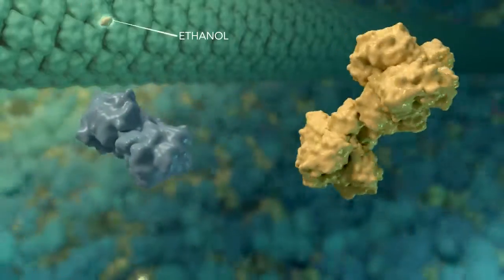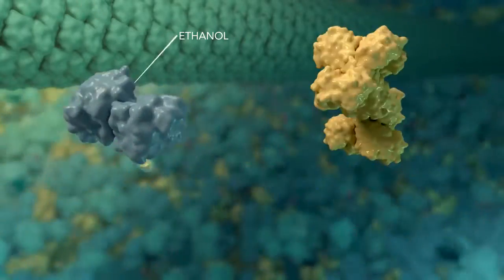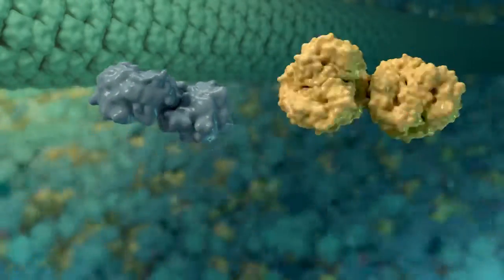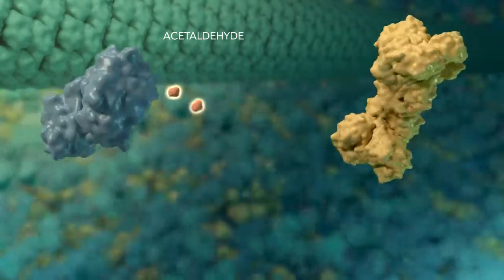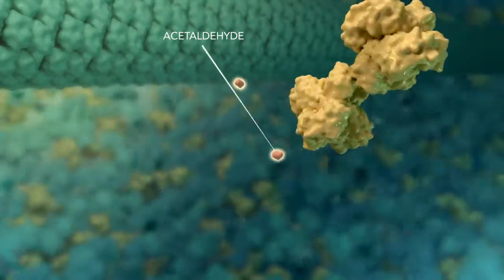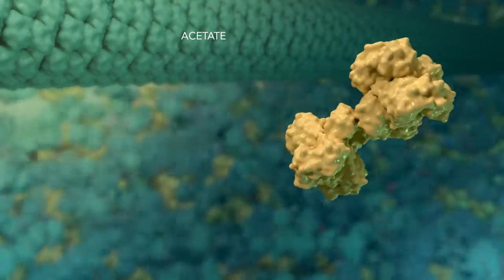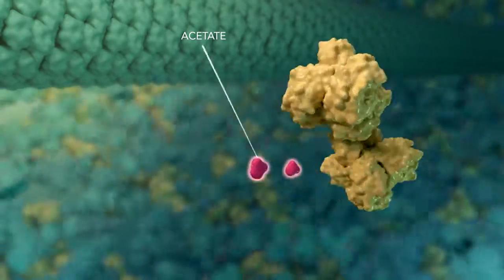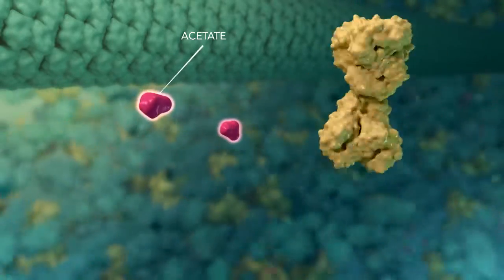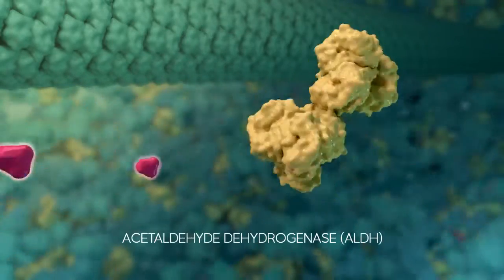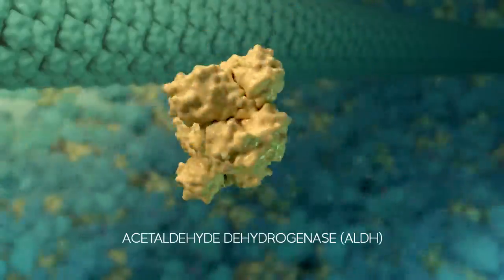In our livers, ethanol is converted to acetaldehyde and then to acetate via acetaldehyde dehydrogenase.